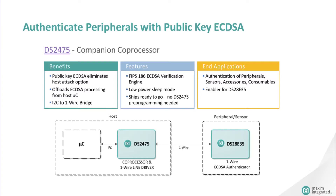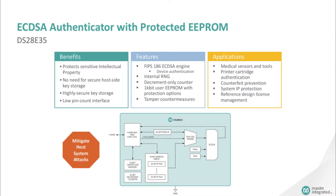The DS2475 has a low-power sleep mode and has no EEPROM on board, so there's no need to pre-program. The DS28E35 provides a highly secure solution based on the industry standard FIPS 186 ECDSA. The ECDSA engine computes keys and signatures using a pseudo-random curve over a prime field, according to the Standards for Efficient Cryptography. The private and public key can be computed by the device or installed by the user and optionally locked. Separate memory space is set aside to store and lock a public key certificate, as it is needed to verify authenticity.